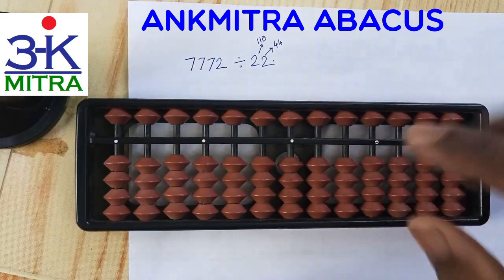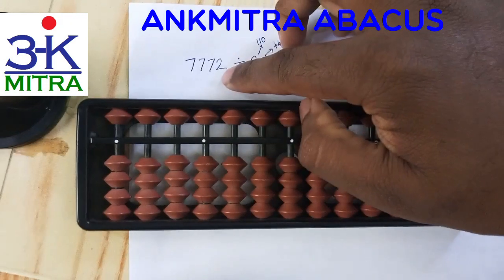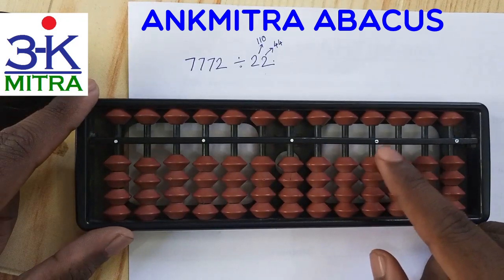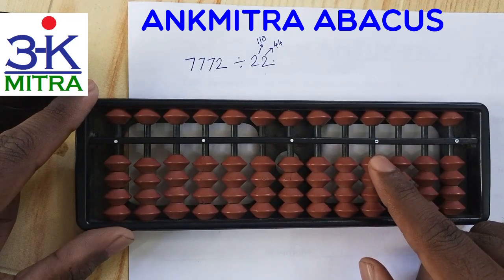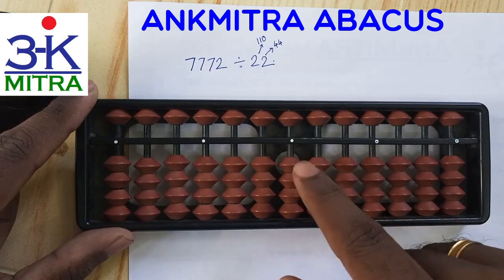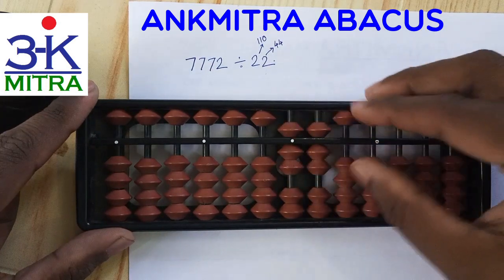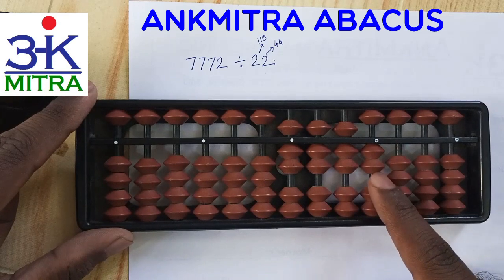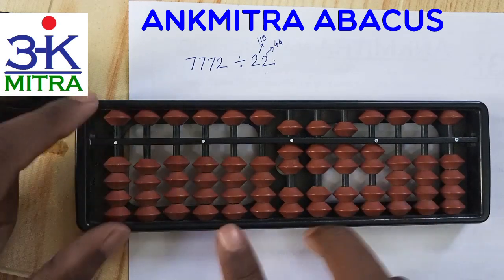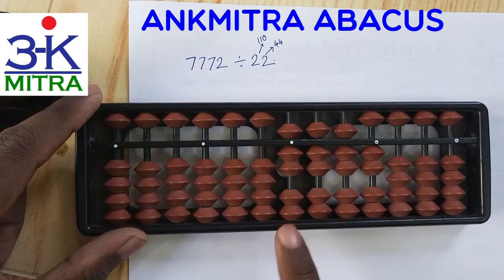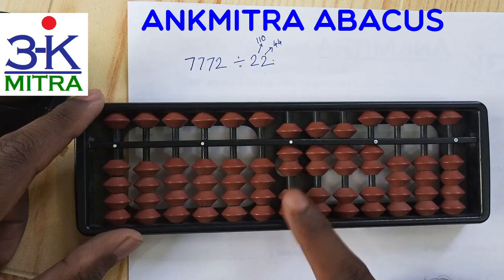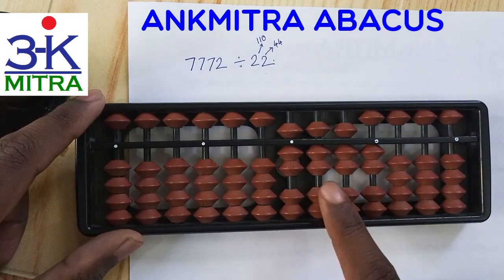The given dividend is 7772. We place it on the rods so that the unit's place ends on a specific white dot. Since it's a four-digit number, it starts from here — 7772 — so the dividend ends on this particular white dot, which becomes the unit's place of the dividend. The answer set will use this corresponding rod as its unit's place.